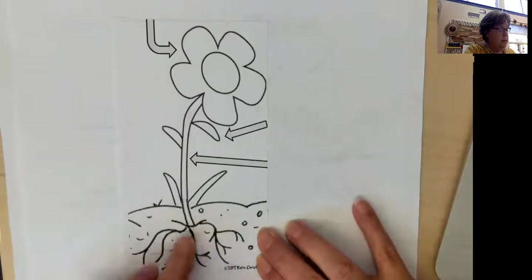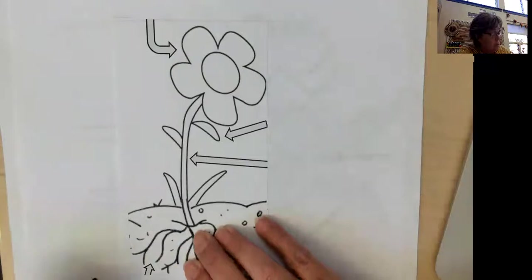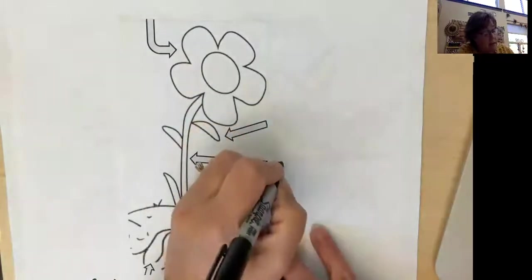So let's start basic with our parts of the plant. We know that down underneath the ground we have the roots and then we know that this is the stem.